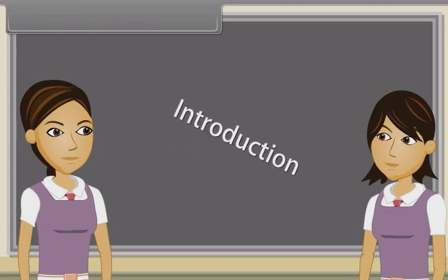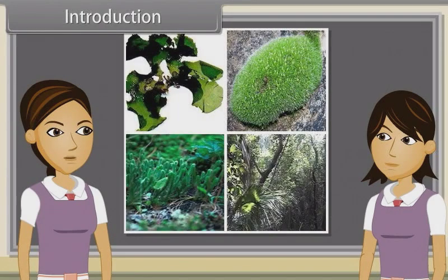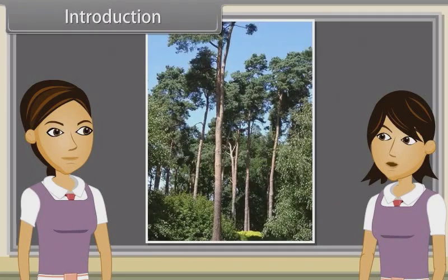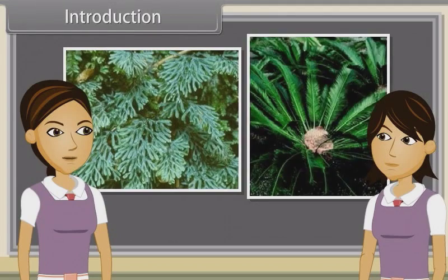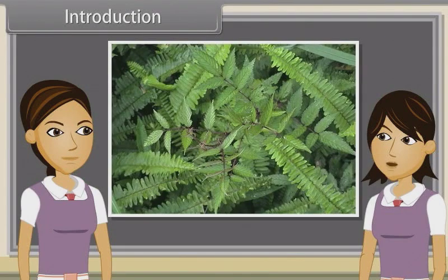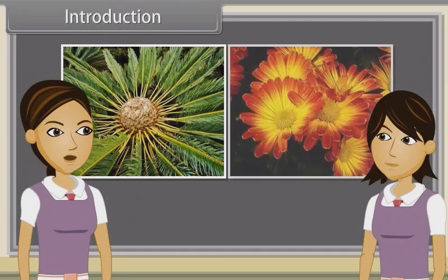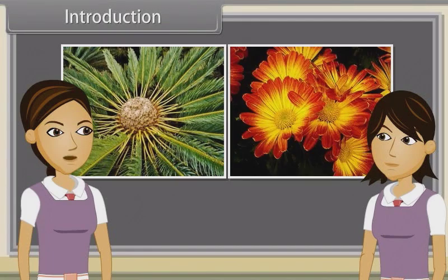Introduction Sharmila, as we have already discussed earlier, that land plants are divided into Thallophyta, Bryophyta, and Tracheophyta. Tracheophyta includes vascular plants. These vascular plants are Pteridophytes, Gymnosperms and Angiosperms. We have already discussed Pteridophytes. Now we are going to study Gymnosperms and Angiosperms.